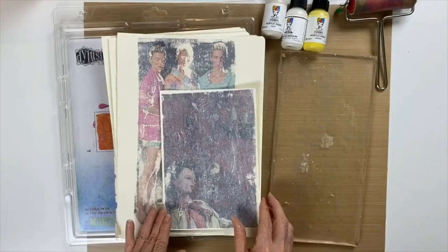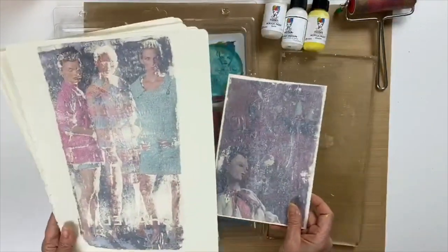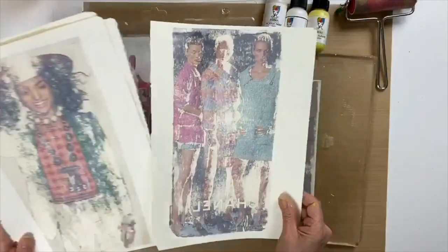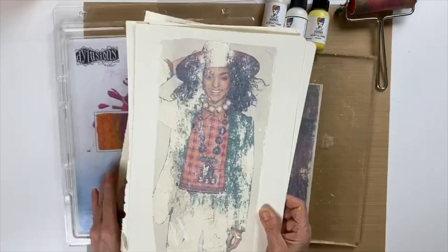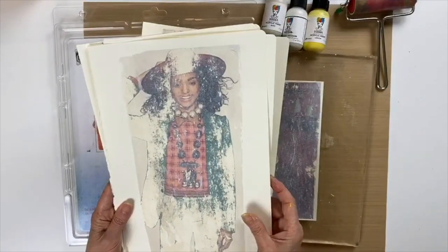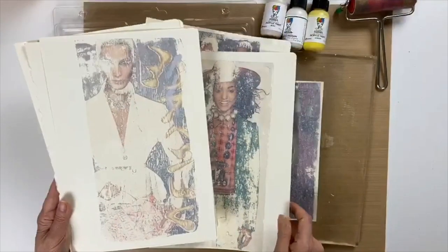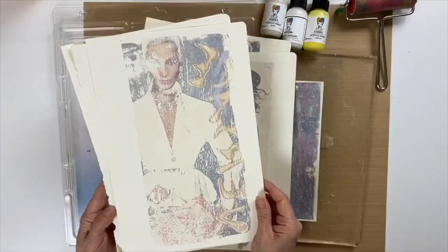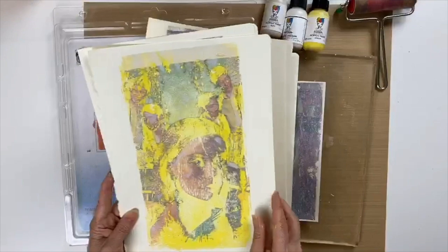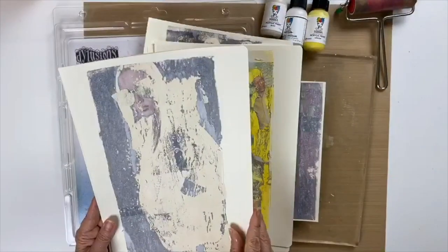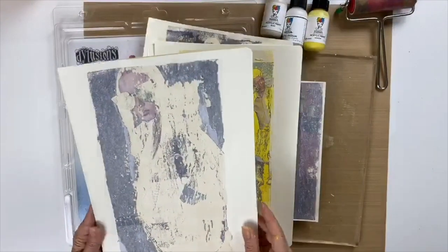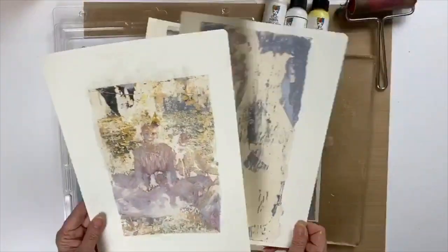Hello, it's Patti Behan here and thanks for tuning in. Today I'm going to show you how to make these fun magazine transfers using the Dilusions and Dina Wakeley Media Gel Plate and some Dina Wakeley Paint and Glazing Medium and a brayer. This is a fun technique to play with and you kind of never know what you're going to get, but let's get started.